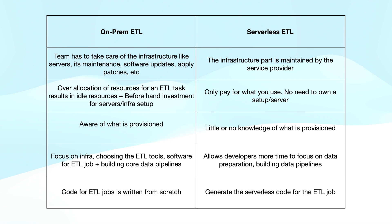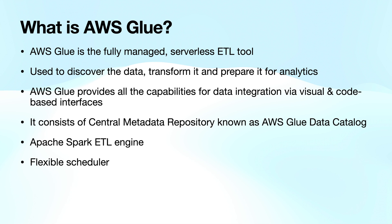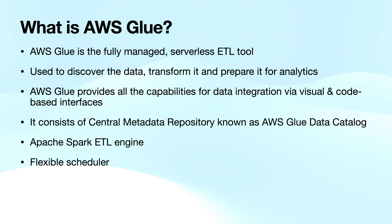Let's understand what is Glue. AWS Glue is a fully managed serverless ETL service which provides all the capabilities for data integration with visual and code-based interfaces. It has a central metadata repository known as AWS Glue Data Catalog, where it stores all the metadata. AWS Glue has a Spark ETL engine that is serverless and a flexible scheduler.